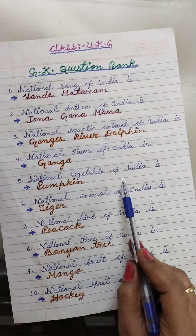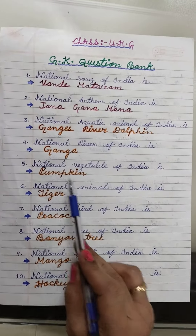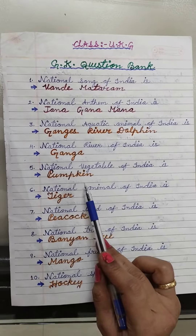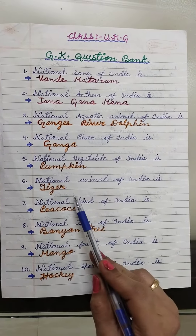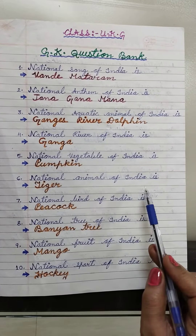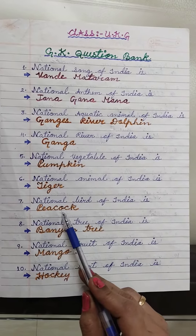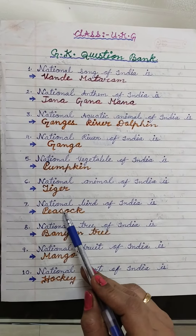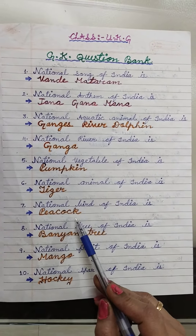National vegetable of India is Pumpkin. National animal of India is Tiger. National bird of India is Peacock.